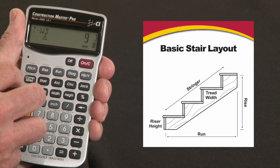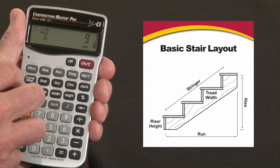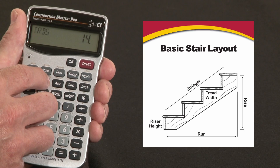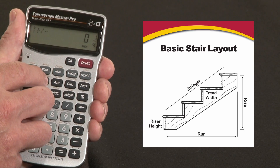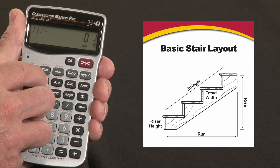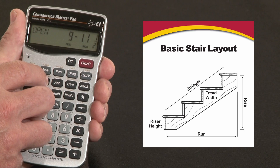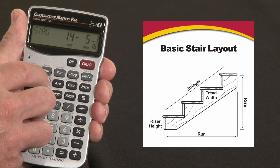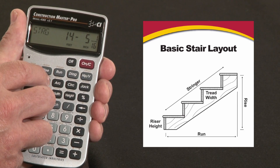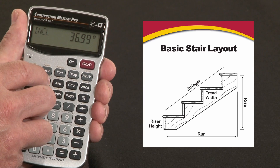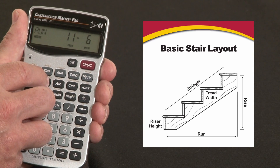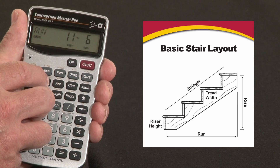In this case, we'll assume you've checked it out with your client and the building inspector, and we'll just proceed on through. There are 14 treads, and there's going to be an adjustment of 1/4 inch — that's the remainder. The stairwell opening is now 9 feet 11 and a half inches. The stringer length is 14 feet 5 and 1/16, and the angle is 36.99 degrees.